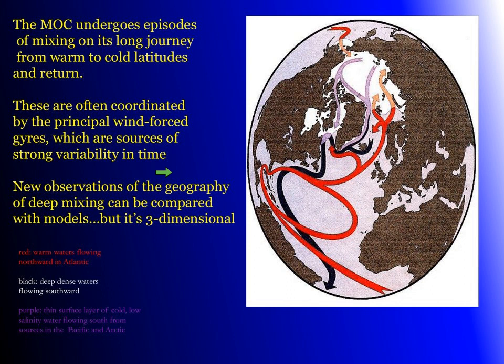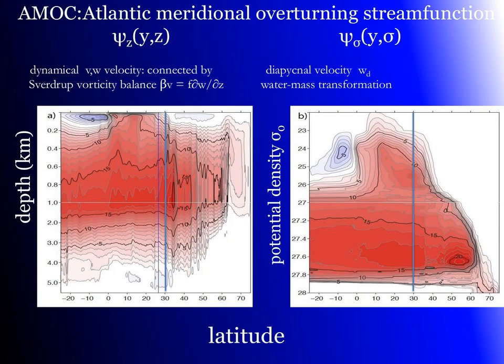What we have recently are new observations of deep mixing, which now can be compared with models and it's three dimensional. So we want to look three-dimensionally at AMOC as much as possible. The familiar AMOC stream function with Z as a vertical coordinate on the left, or with potential density as a vertical coordinate on the right — we're actually using sigma-theta surface referenced potential density. Most of the labels will actually be sigma-two for two-kilometer reference, which is what the HICOM model uses. Notable in the overturning stream function, which runs between 20 south and 75 north, is of course the northward flow of the warm branch.